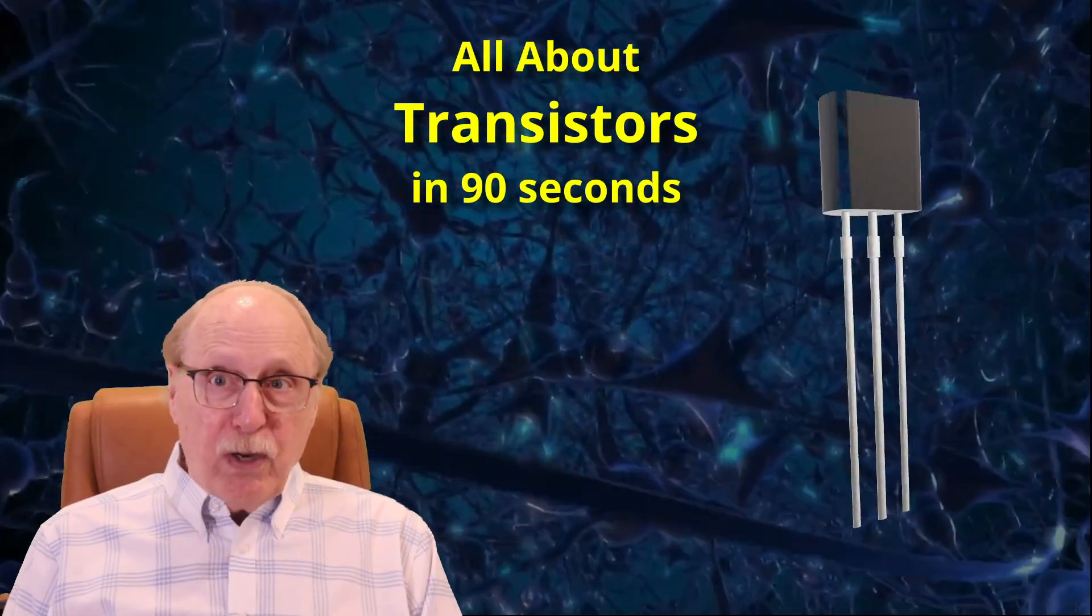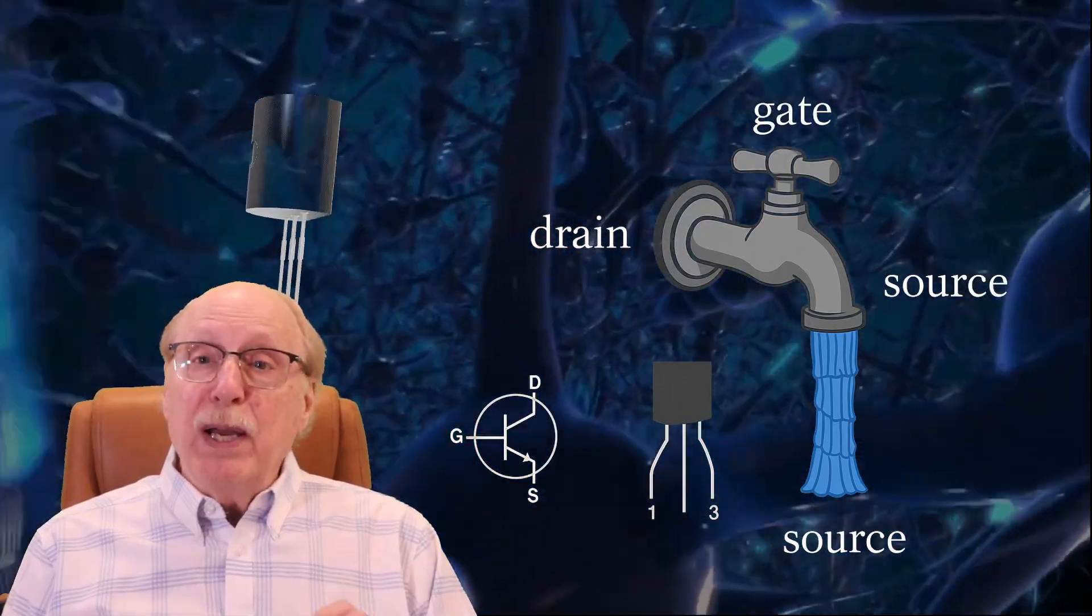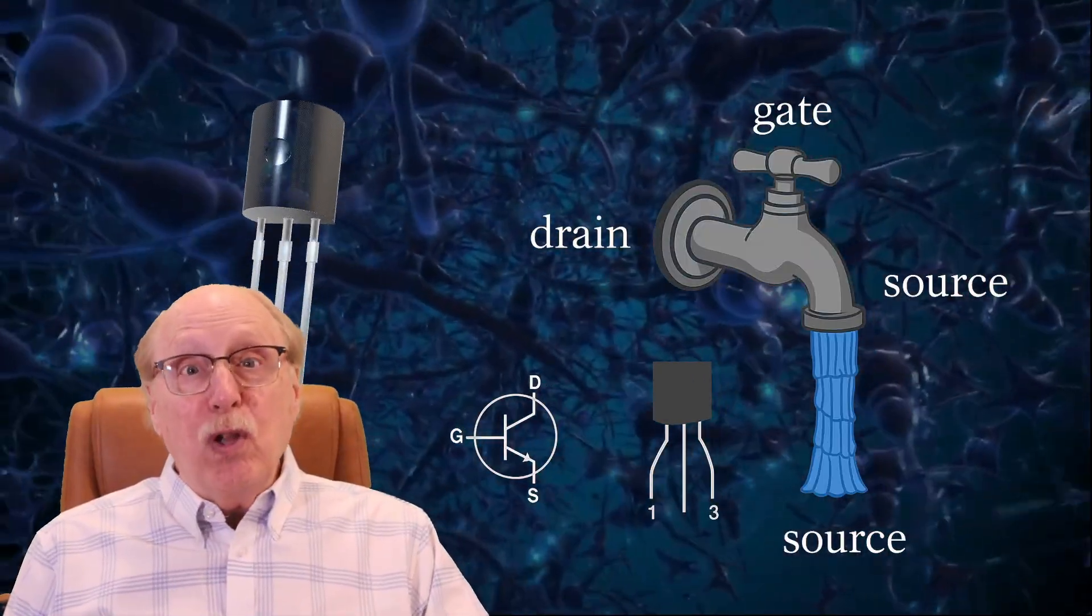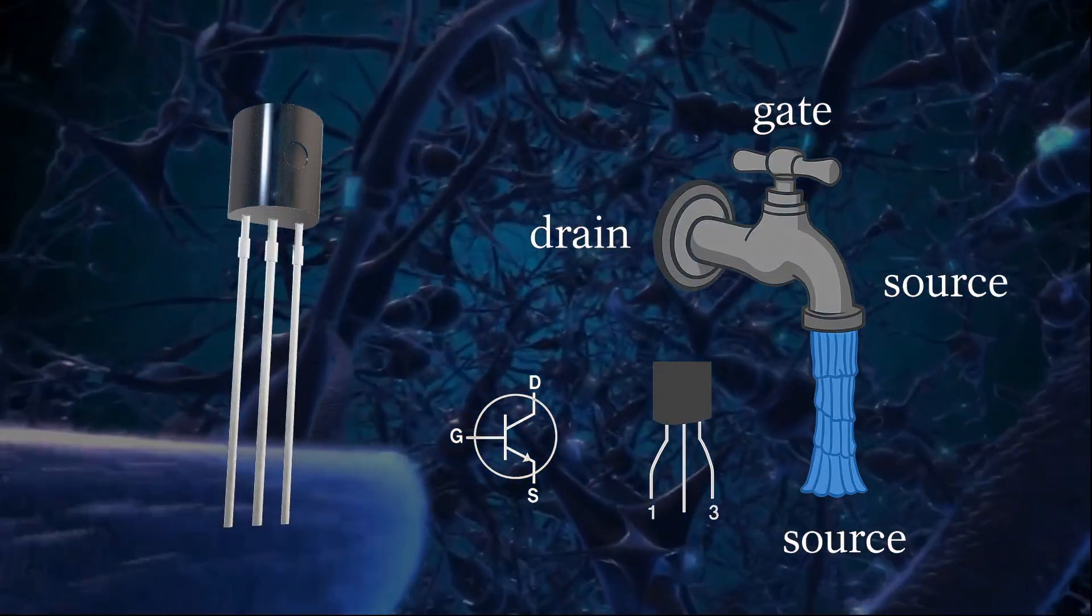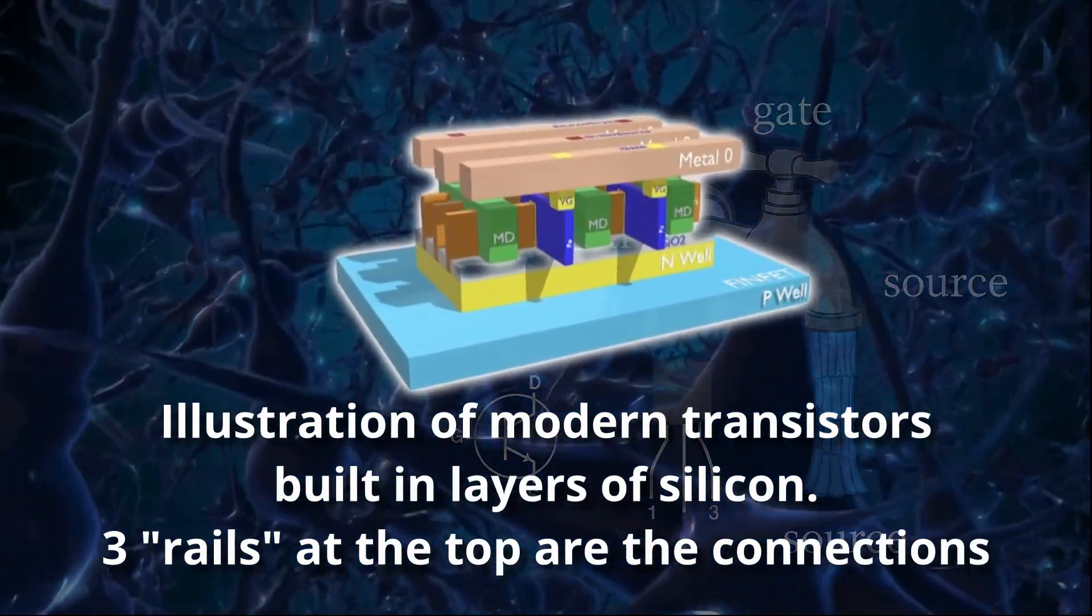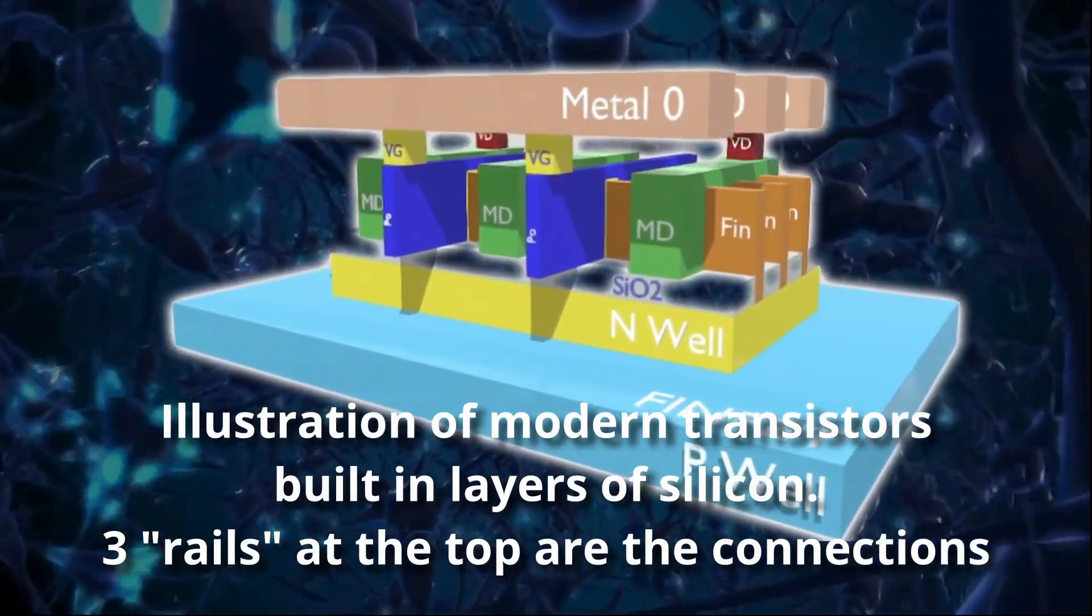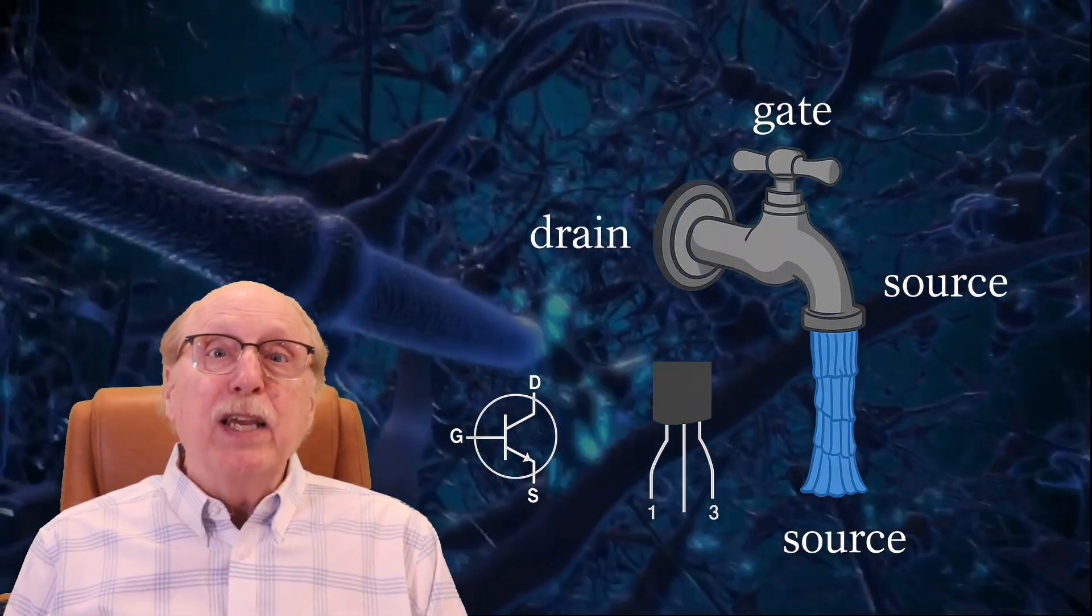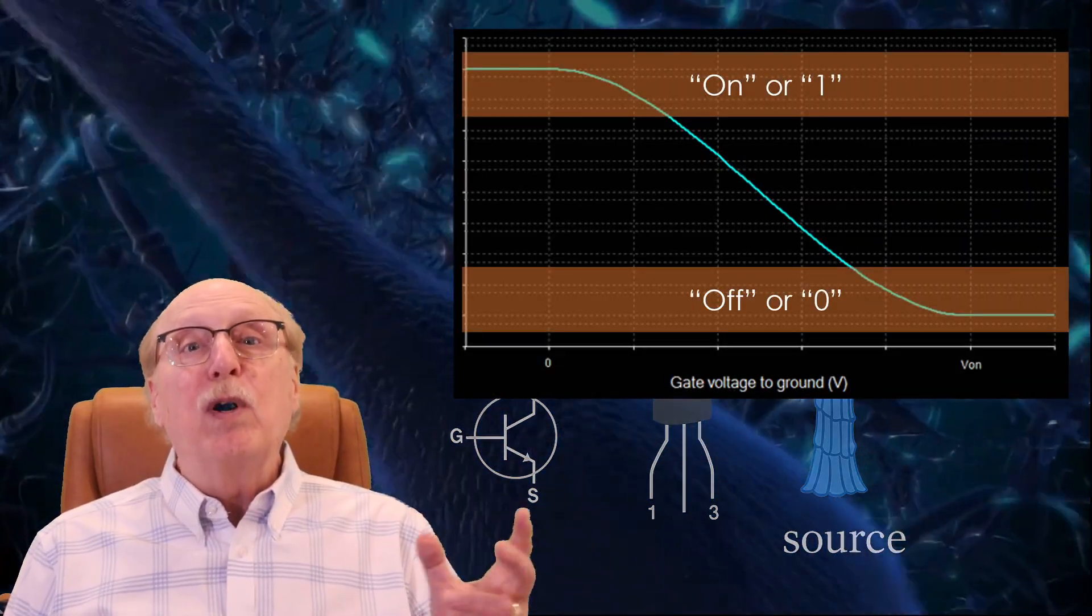I'll start with transistors because they're simpler. A transistor has three terminals and works by utilizing a small control signal in one terminal to control a larger signal flowing between the other two. When the control receives the right voltage, it allows electricity to flow, turning the switch on, otherwise it is off.